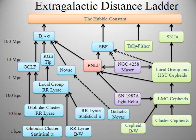When the absolute magnitude for a group of stars is plotted against the spectral classification of the star in a Hertzsprung–Russell diagram, evolutionary patterns are found that relate to the mass, age, and composition of the star. In particular, during their hydrogen-burning period, stars lie along a curve in the diagram called the main sequence. By measuring these properties from a star's spectrum, the position of a main sequence star on the HR diagram can be determined, and thereby the star's absolute magnitude estimated. A comparison of this value with the apparent magnitude allows the approximate distance to be determined, after correcting for interstellar extinction. In a gravitationally bound star cluster such as the Hyades, the stars formed at approximately the same age and lie at the same distance, allowing relatively accurate main sequence fitting, providing both age and distance determination.